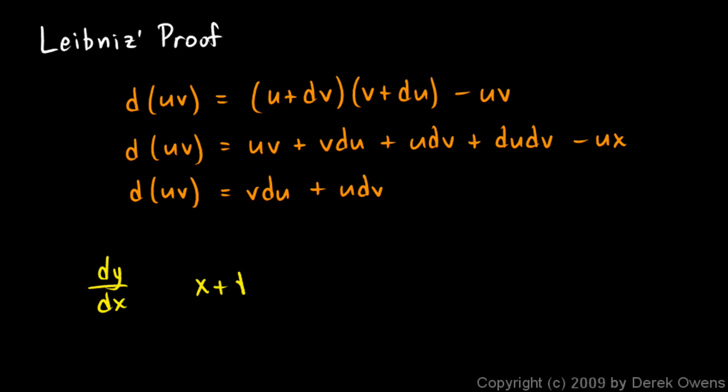Thus, if we have x plus dx, then dx is rejected. And what he means by that is dx is infinitely small, and so compared to something like x, we can just ignore it.